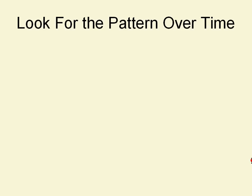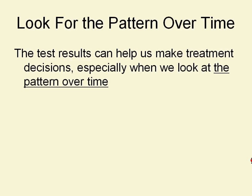What we really want to do is look for the pattern over time. A single test result only tells us about that one tablespoon of blood. We want to take a tablespoon of blood now, then in three months, then three months after that, so we can really look at the pattern over time. That helps us make treatment decisions. One data point tells us where that point is, but it doesn't tell us everything — it's as we get more results that we really know what we're looking at.